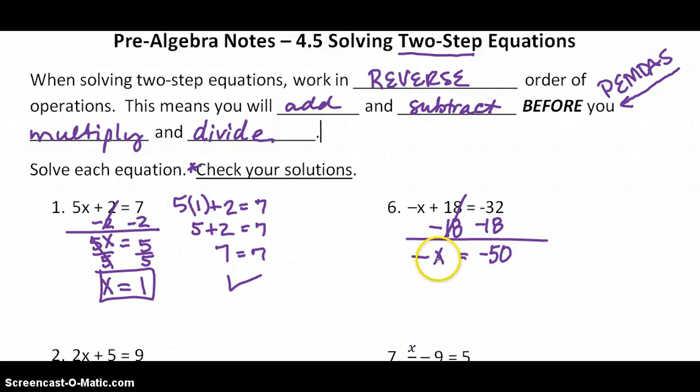Now technically, x is being multiplied times a negative 1. So to undo multiplication, we divide. So I'm going to divide both sides by negative 1. That makes negative over negative is positive x over 1 is x. And then same thing happens to our negative 50. Negative over negative makes positive. So let's check and make sure 50 will give us the right answer.